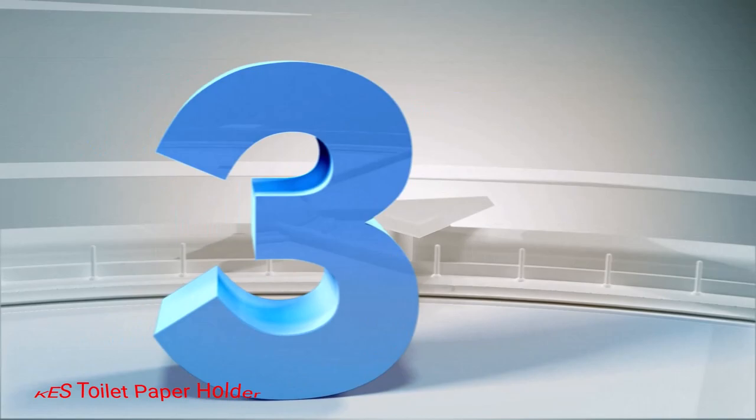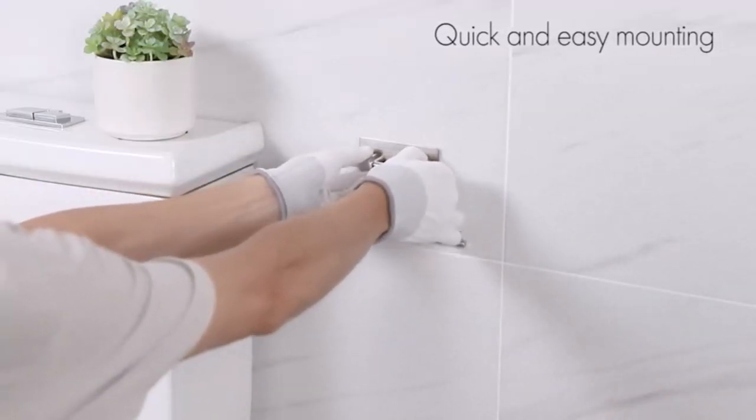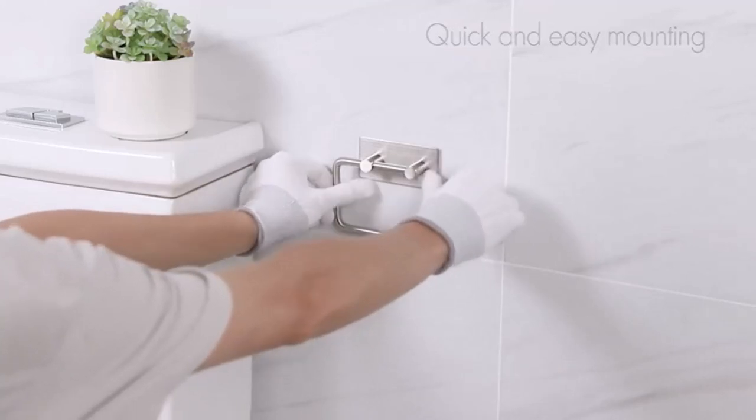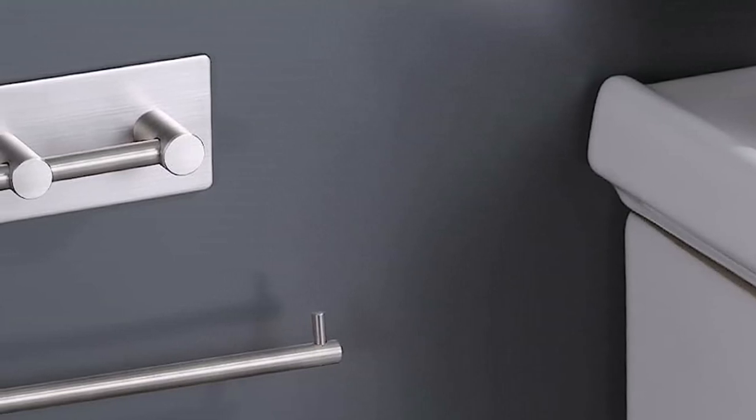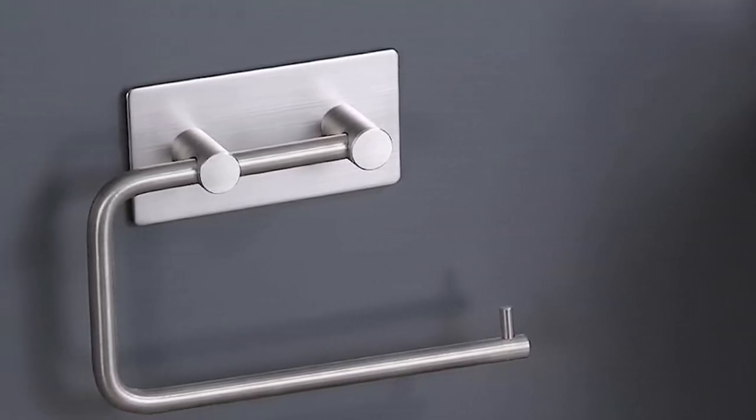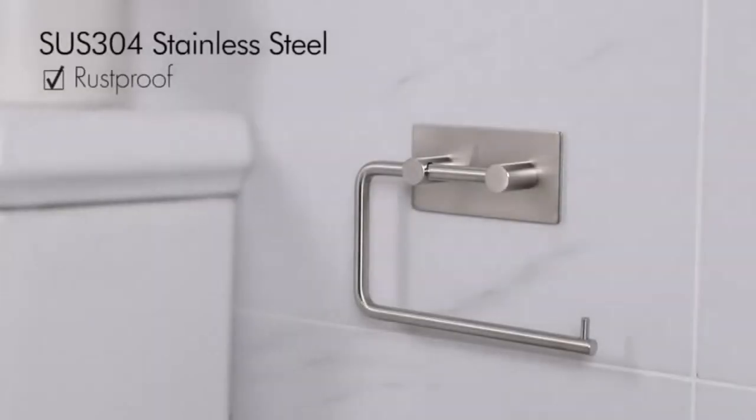Number 3. Kess Toilet Paper Holder. Kess is an RV waterproof toilet paper holder that features a self-adhesive strip for easy mounting. Surprisingly, the adhesive strip is waterproof, so the holder won't fall, even if you expose it to moisture. There's no need to drill any holes because this holder can be stuck to any wall like a sticker.